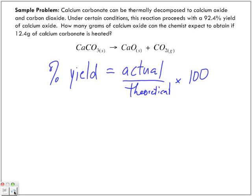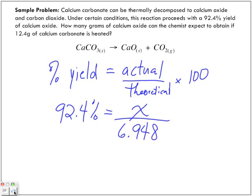So, what information do we have? Well, we have 92.4 percent. We're trying to find the actual. Theoretically, we have 6.948 grams times 100.